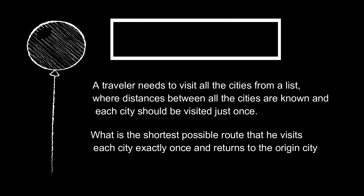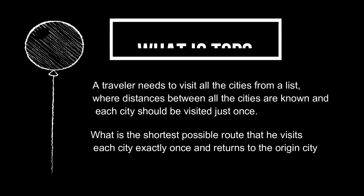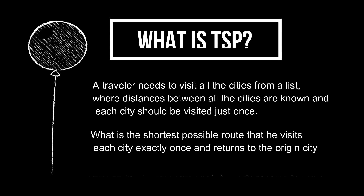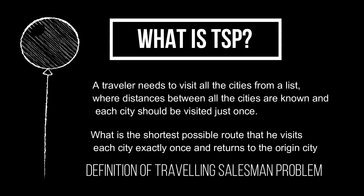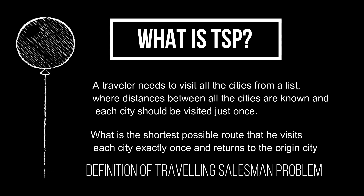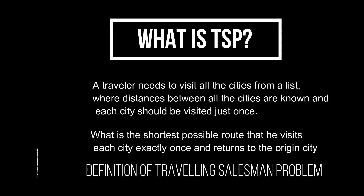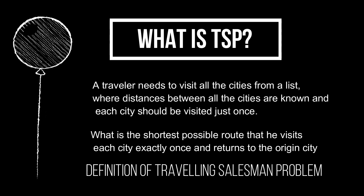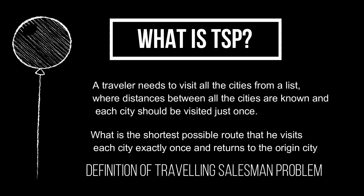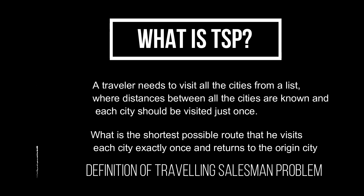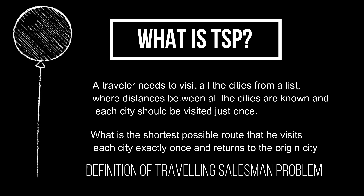A traveler needs to visit all the cities from a list, where distances between all the cities are known and each city should be visited just once. What is the shortest possible route that he visits each city exactly once and returns to the origin city?